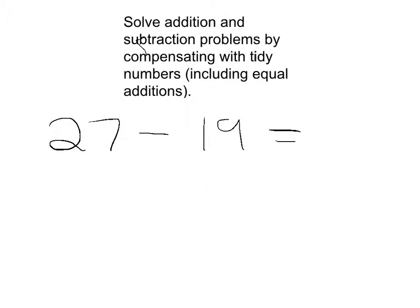So what we would mean by compensating, using compensation, is we would actually go 27 minus 20, because that's easier to do than 27 minus 19. So all we've actually done is added 1 to this.